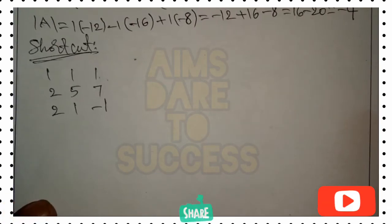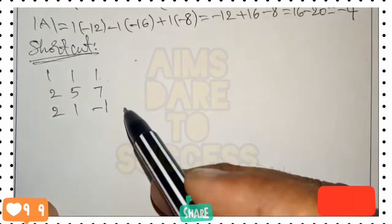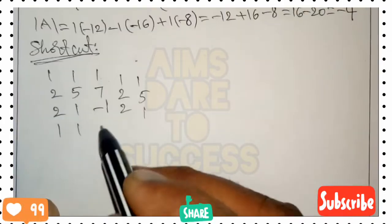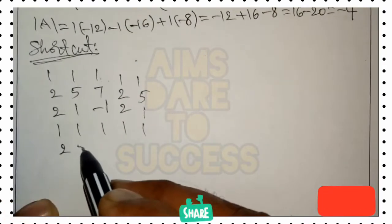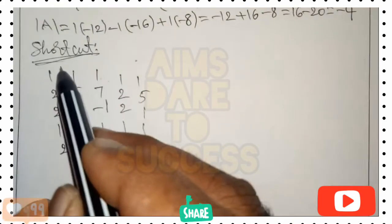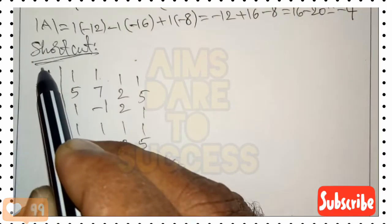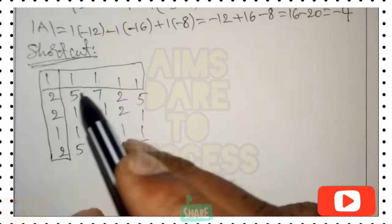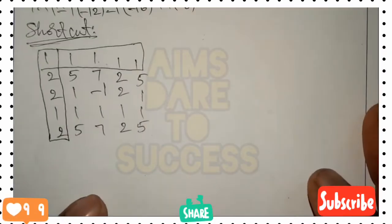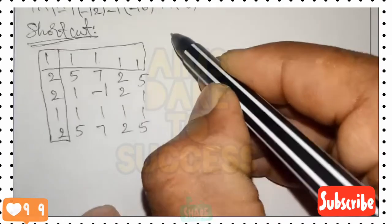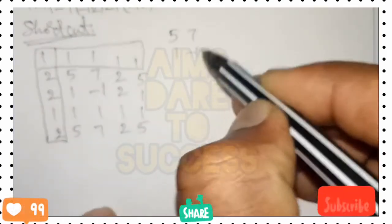Write column one again: 1, 2, 2, and column two again: 1, 5, 1. Then write row one again: 1 1 1, and row two again: 2 5 7. After that, remove column one and row one from the extended matrix to obtain the remaining 4×4 block, and write it as a new matrix using the ad minus bc concept.